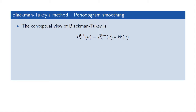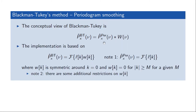The Blackman-Tukey method doesn't have to be implemented in the frequency domain — it can be implemented in the time domain. Since the periodogram is the discrete-time Fourier transform of an autocorrelation estimate, we can use a window w(k), the inverse of the smoothing function, and apply it to the autocorrelation function estimate. This makes sense a priori because the autocorrelation estimate is less reliable for larger time lags, so weighting down those values should improve the estimate. This windowing is equivalent to the averaging in the frequency domain.